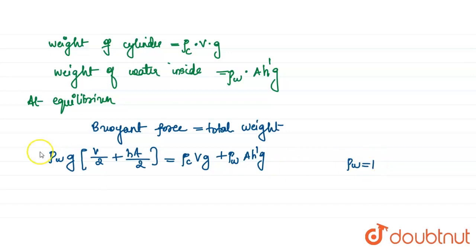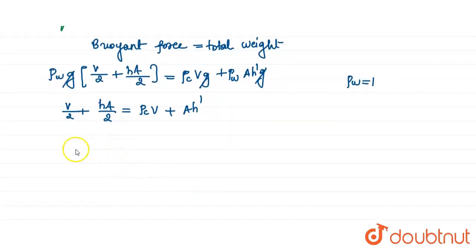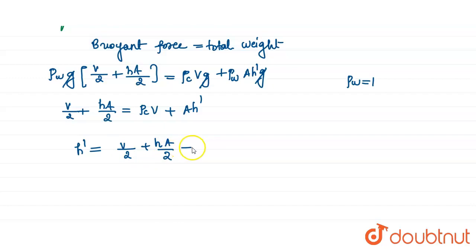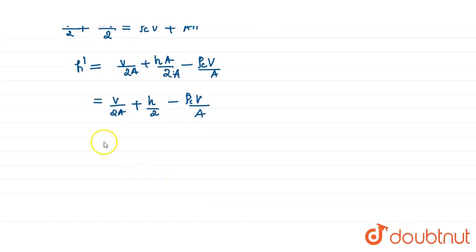Since the density of water is 1, we can cancel g throughout. We get: V/2 + HA/2 = ρC × V + A × H-dash. Solving for H-dash: H-dash = (V/2 + HA/2 − ρC × V) / A, which simplifies to H-dash = H/2 + (V/2A)(1 − 2ρC).